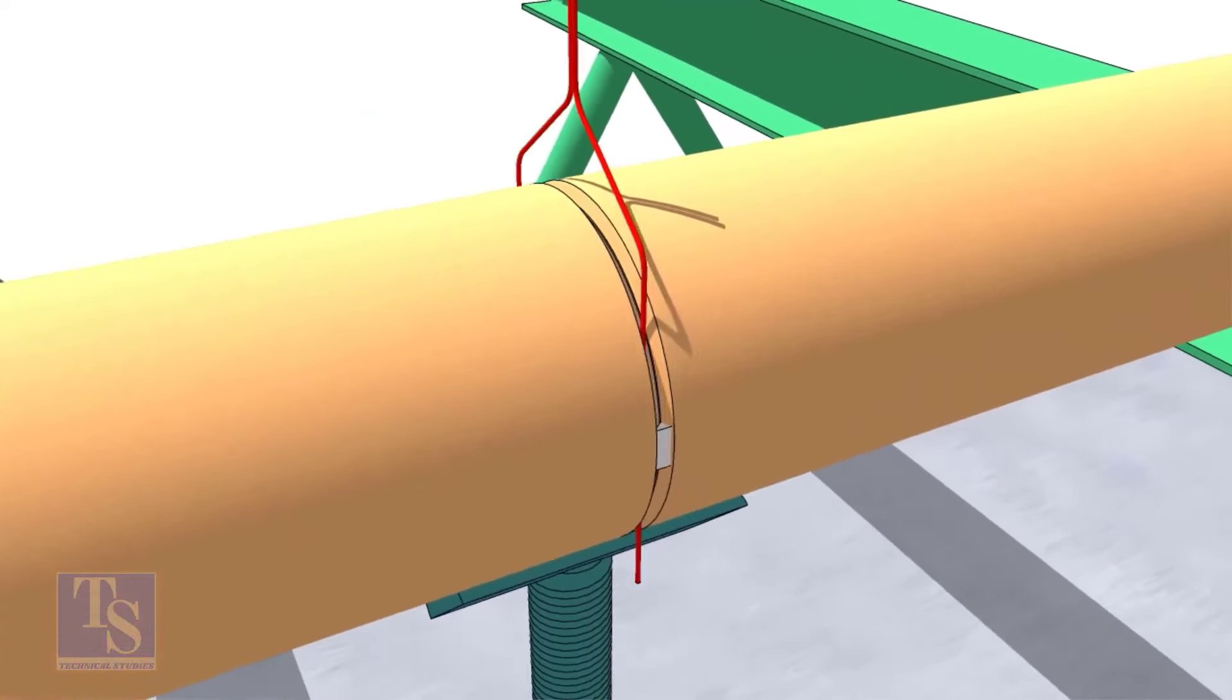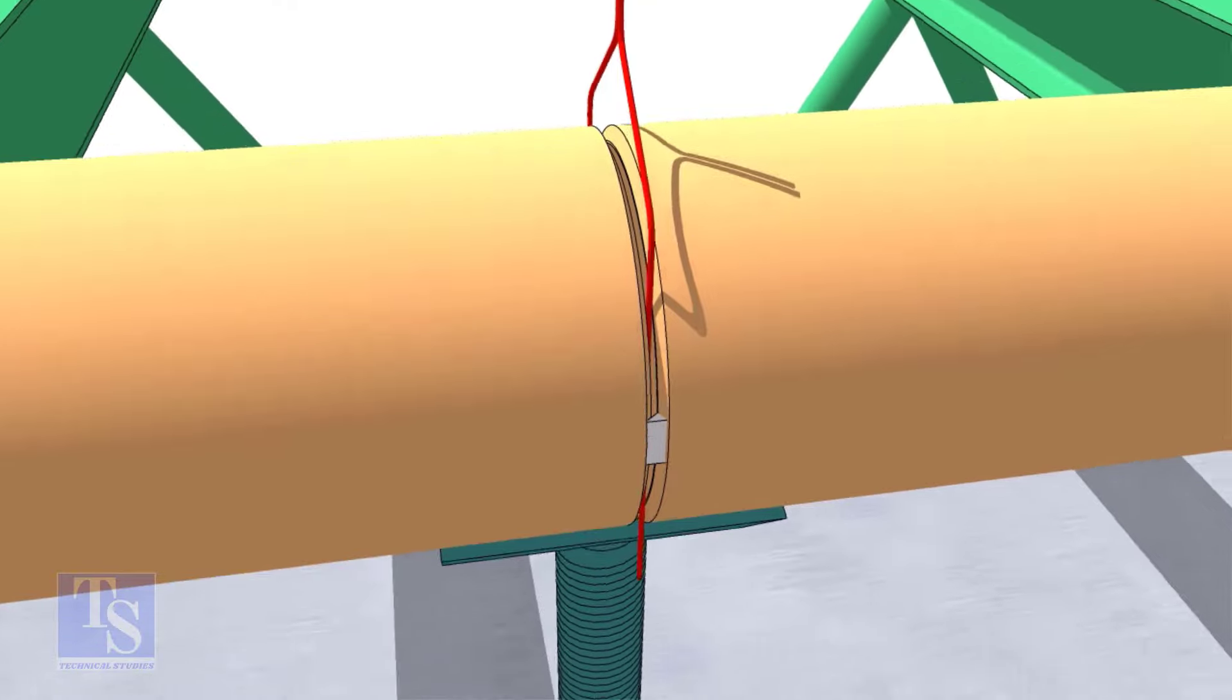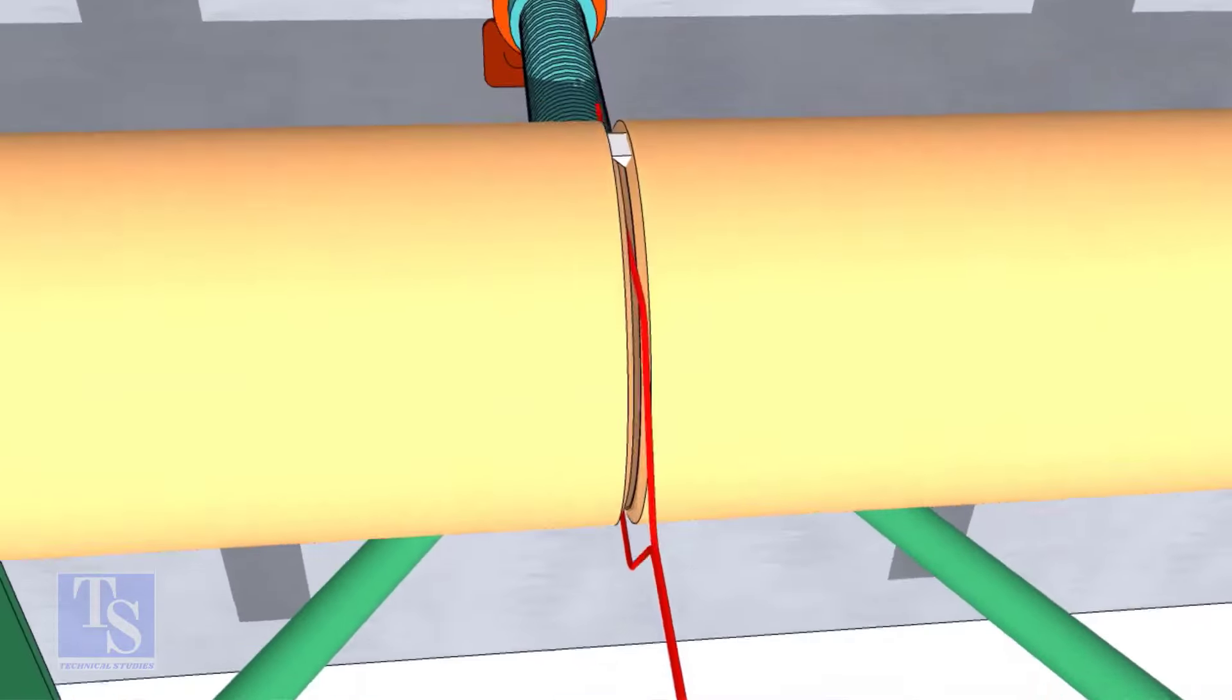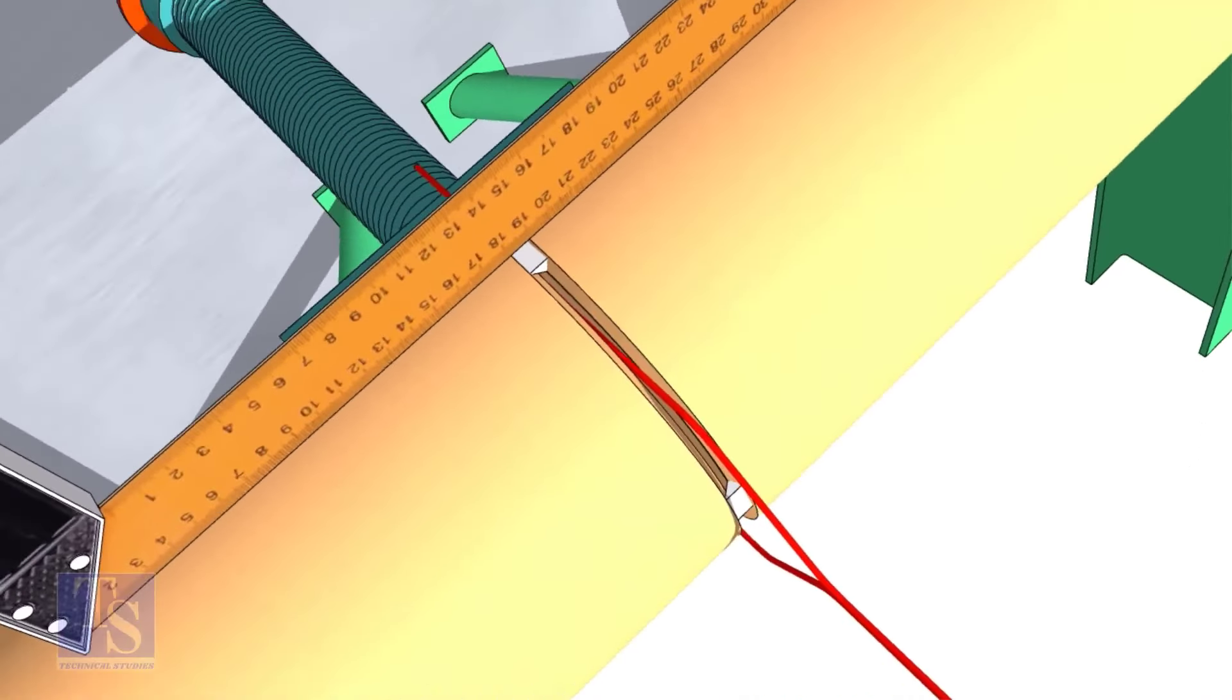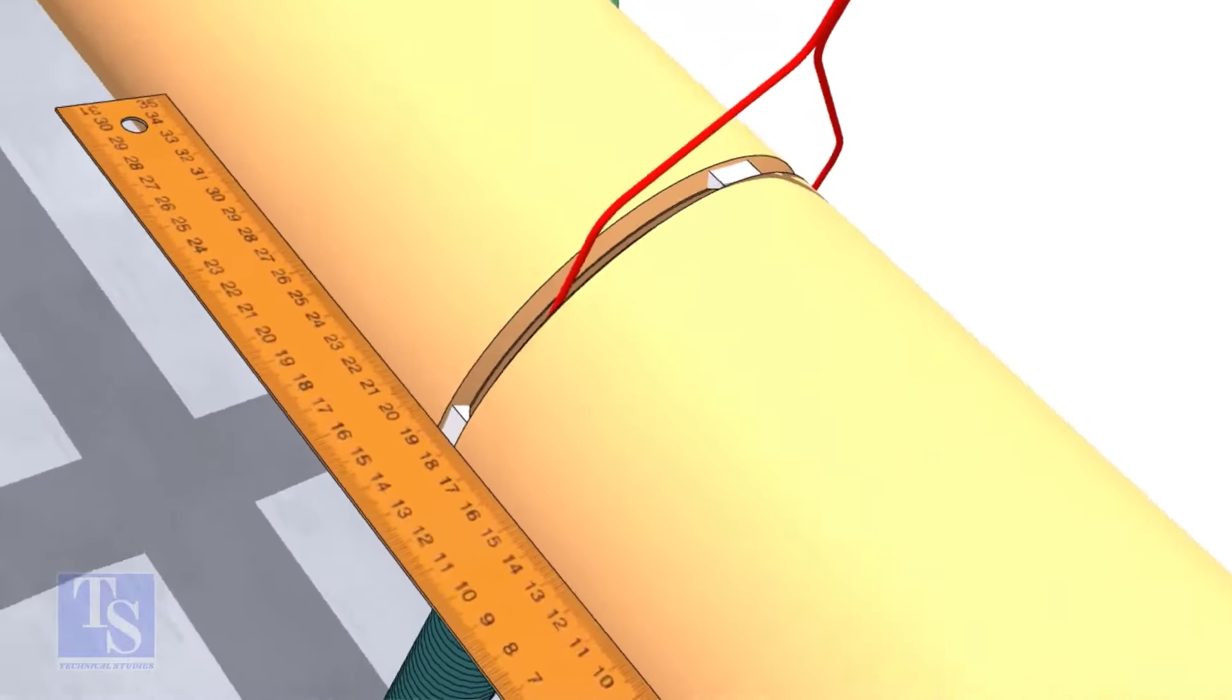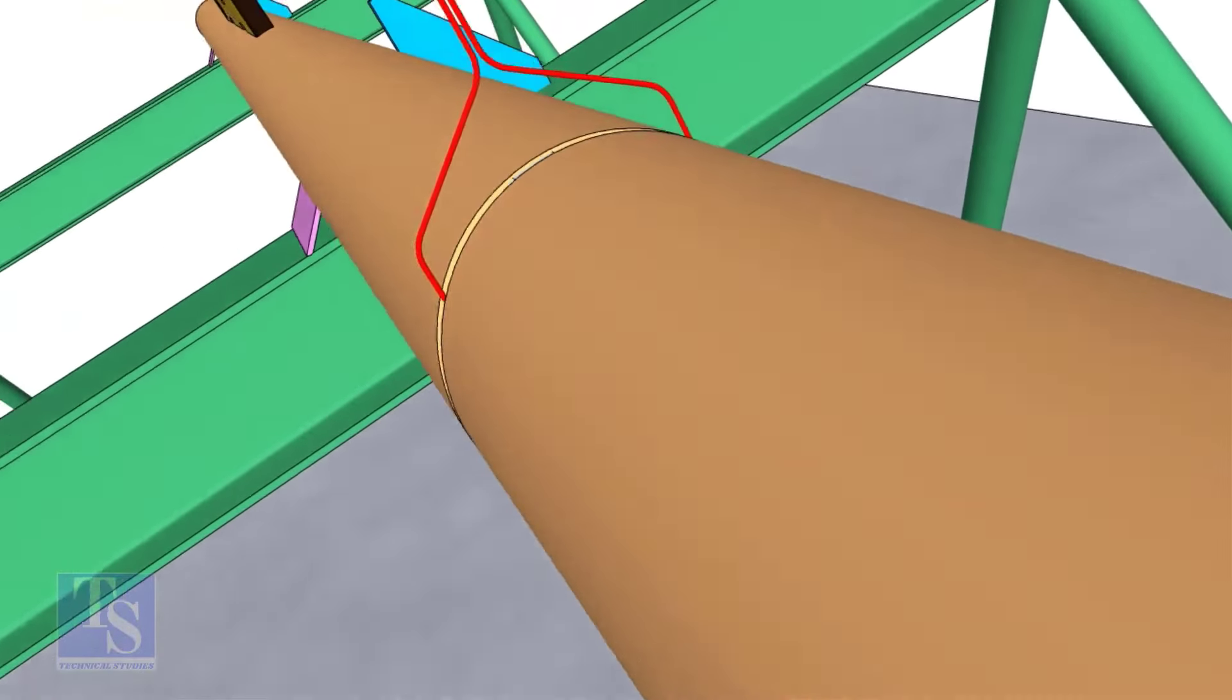Tack weld on both sides of the pipe, then the top and bottom of the joint. Don't forget to cross-check the overlap.